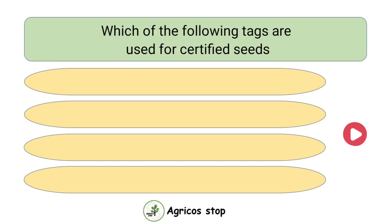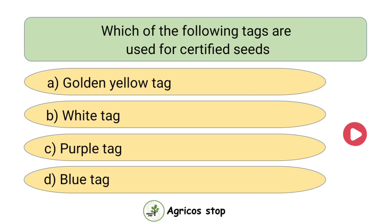Which of the following tags are used for certified seeds? Options are golden yellow tag, white tag, purple tag, and blue tag. The answer is blue tag. Azure blue tag is used for certified seeds.